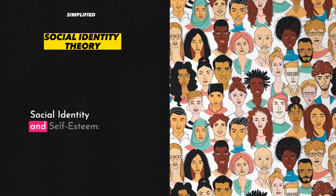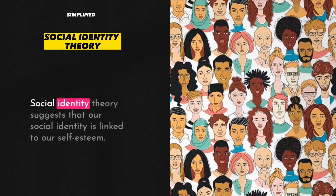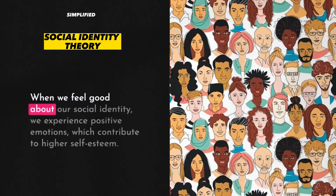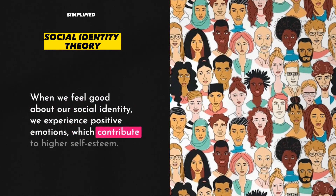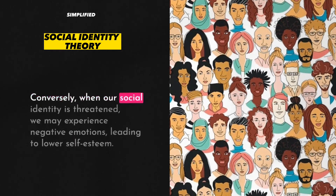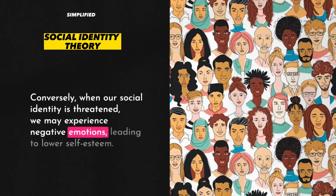5. Social Identity and Self-Esteem. Social Identity Theory suggests that our social identity is linked to our self-esteem. When we feel good about our social identity, we experience positive emotions, which contribute to higher self-esteem. Conversely, when our social identity is threatened, we may experience negative emotions, leading to lower self-esteem.